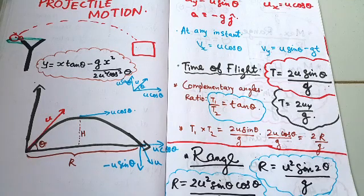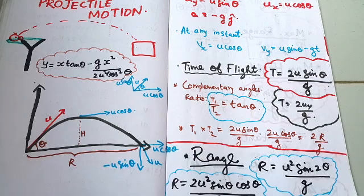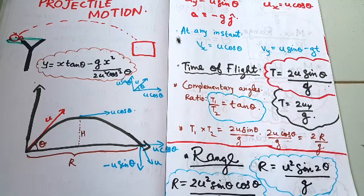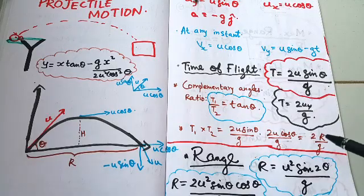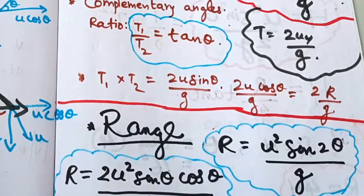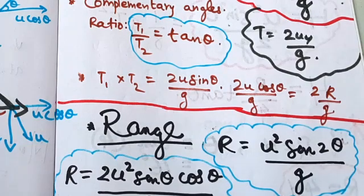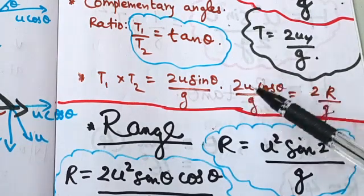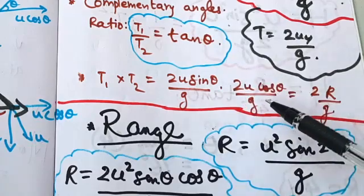The horizontal range R is equal to u squared sin 2 theta by g.